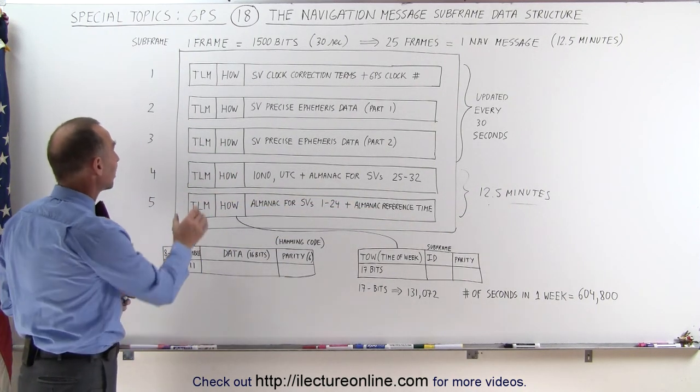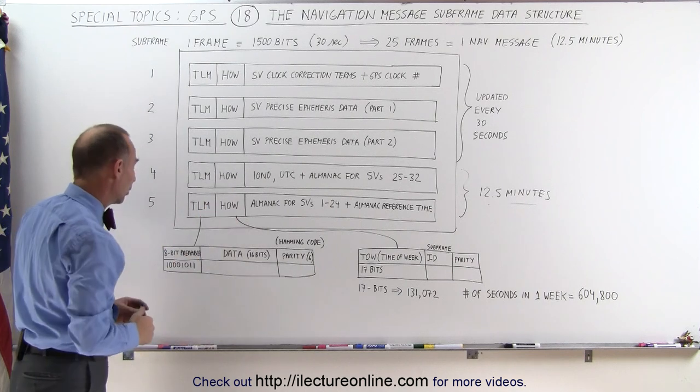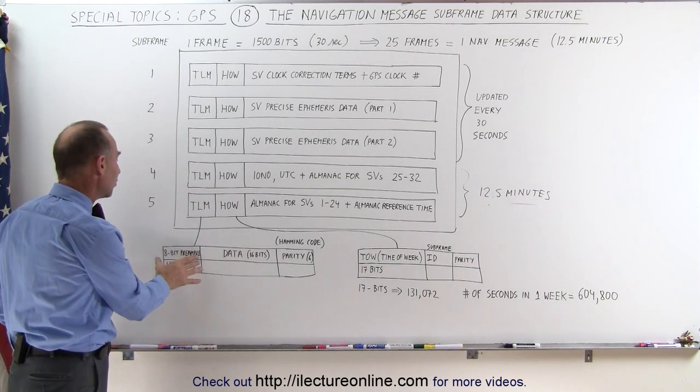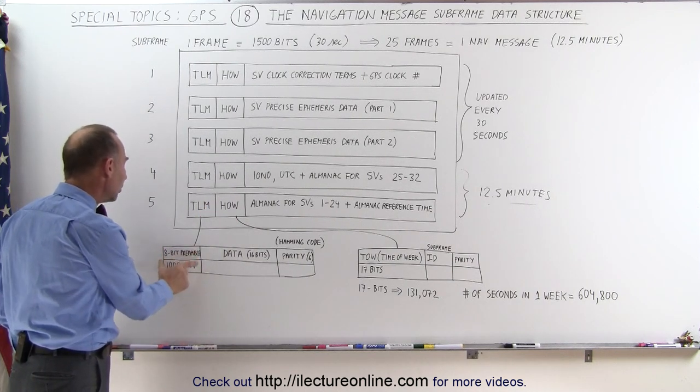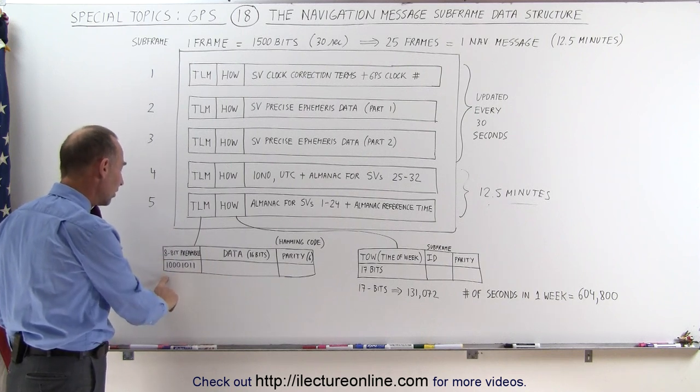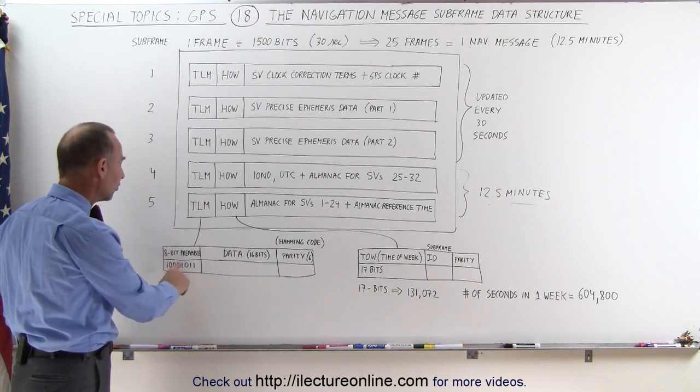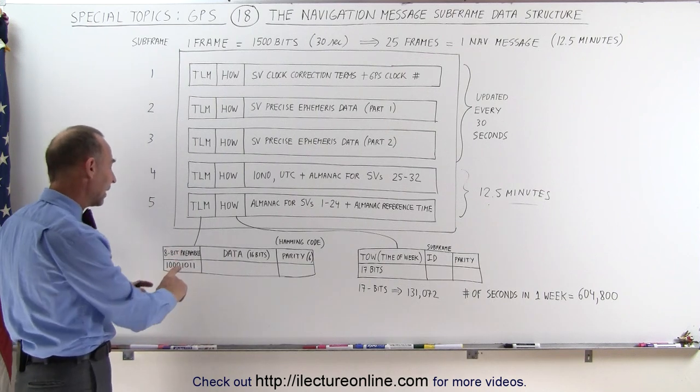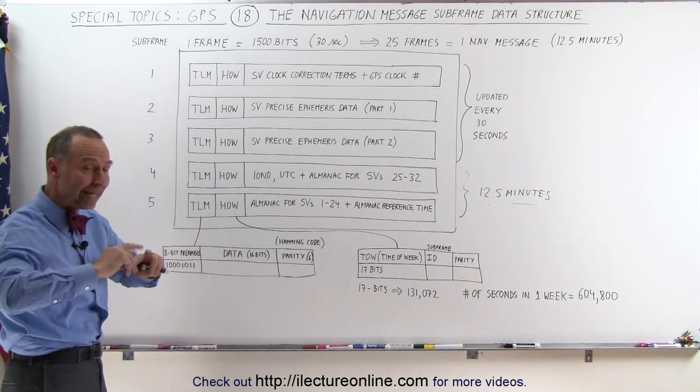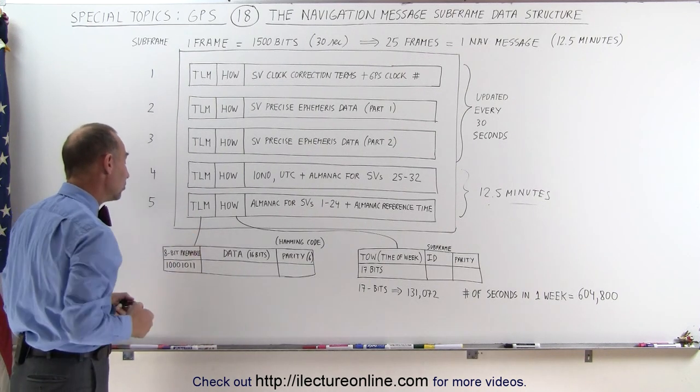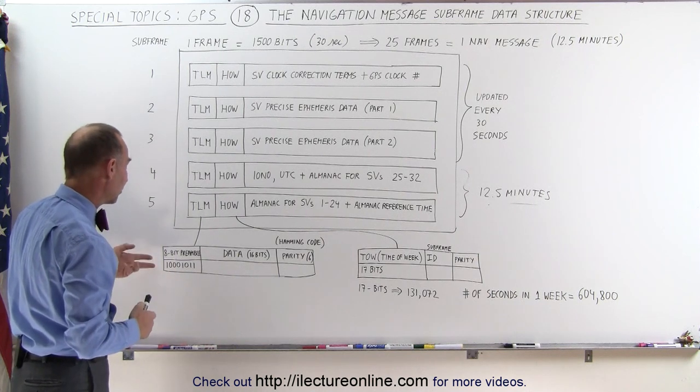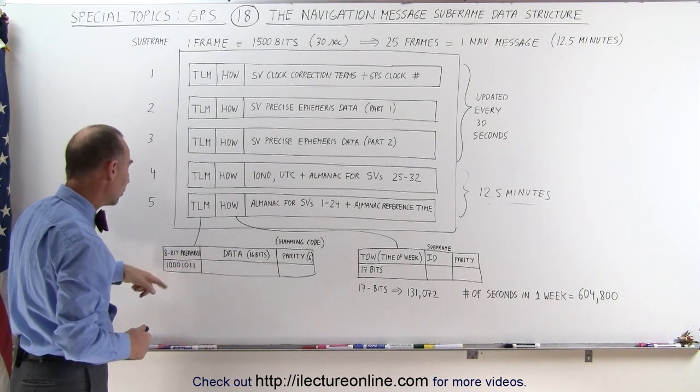A little bit more information about the telemetry word and the handover word. Notice that in the telemetry word, we have an 8-bit preamble, which either has the 8-bit set to 10001011, or in reverse, if the data has been shifted. If the carrier wave has been shifted, then the preamble data will be opposite.